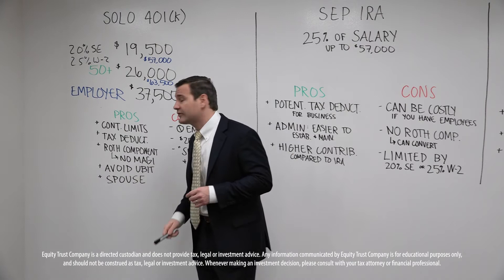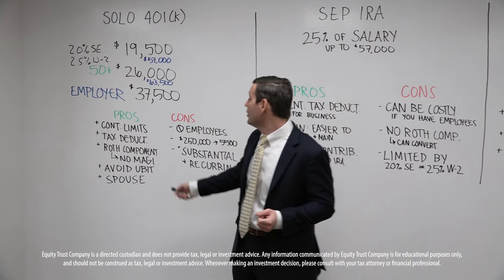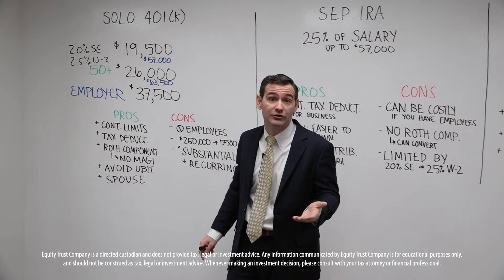With the Roth component, note that there are no MAGI limits. With a Roth IRA, if you make too much money, you may not be able to contribute directly and might have to do a backdoor Roth IRA. With a Roth component to a solo 401k, there are no income restrictions — you just have to have earned income in order to make the contribution.